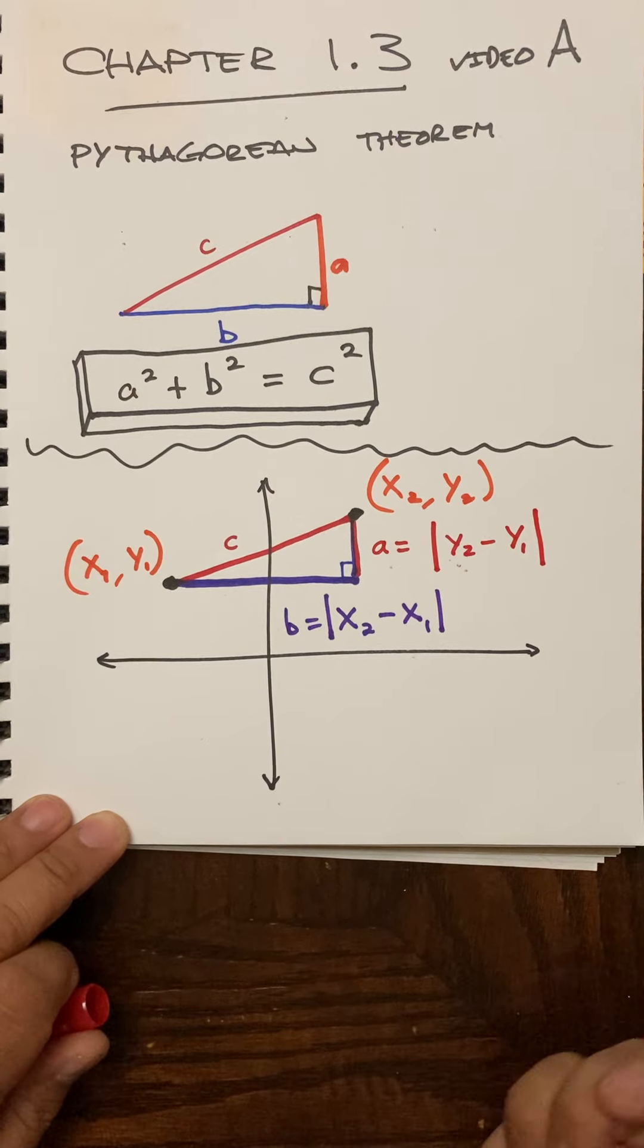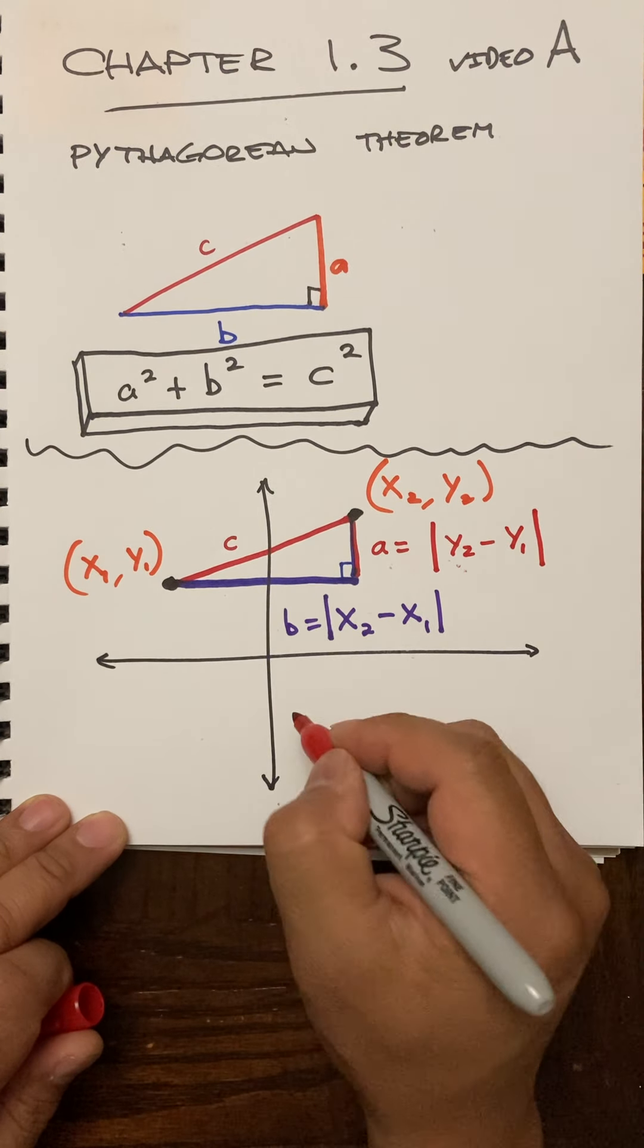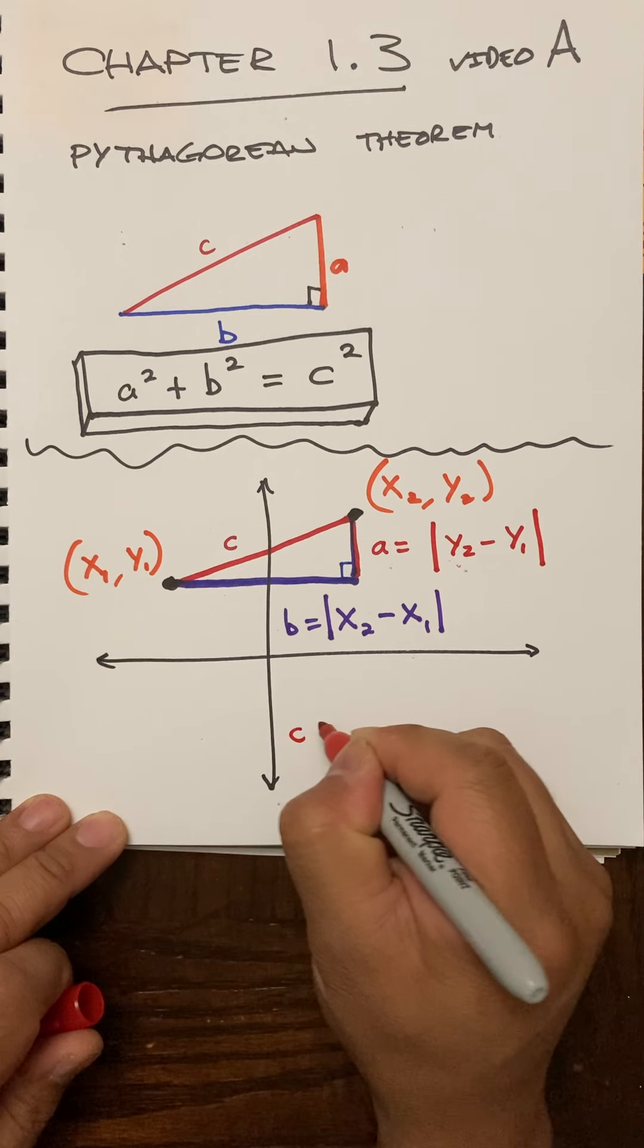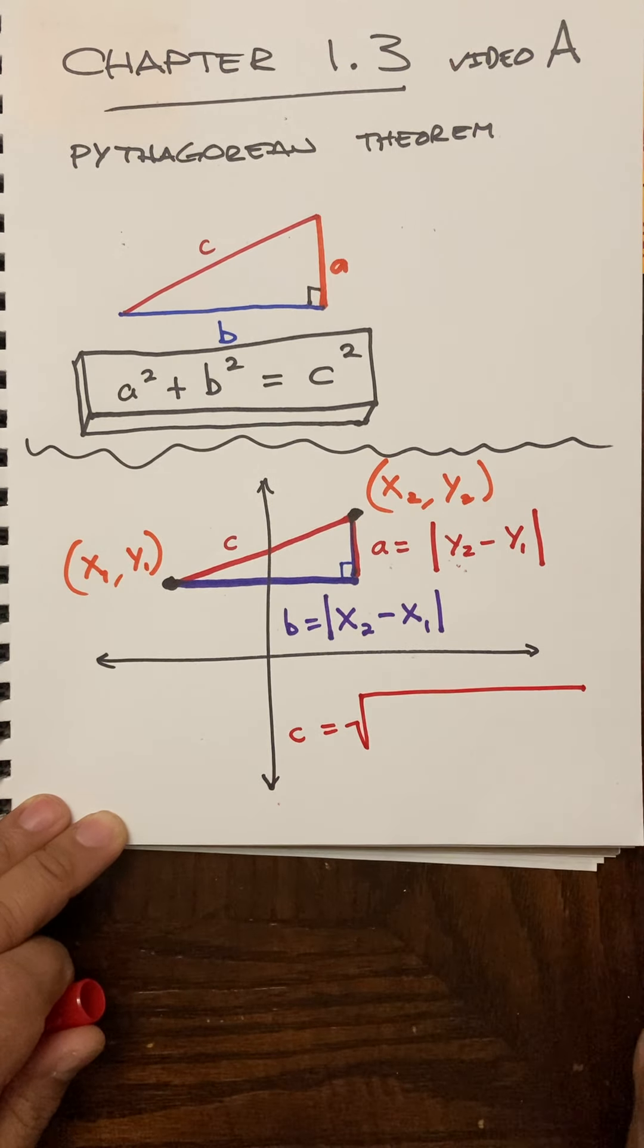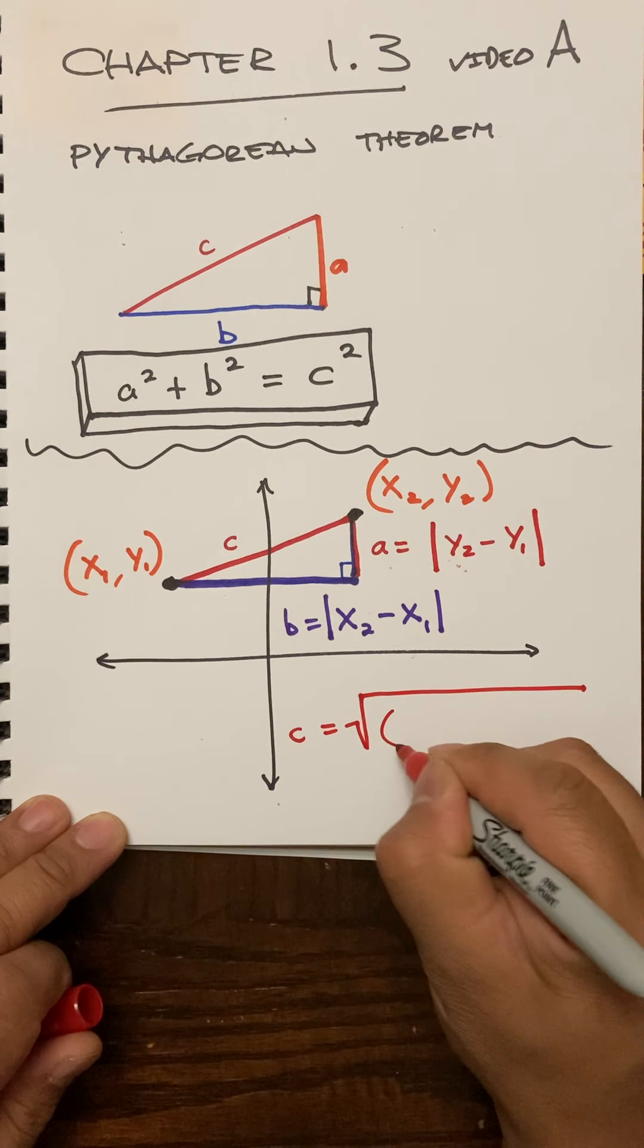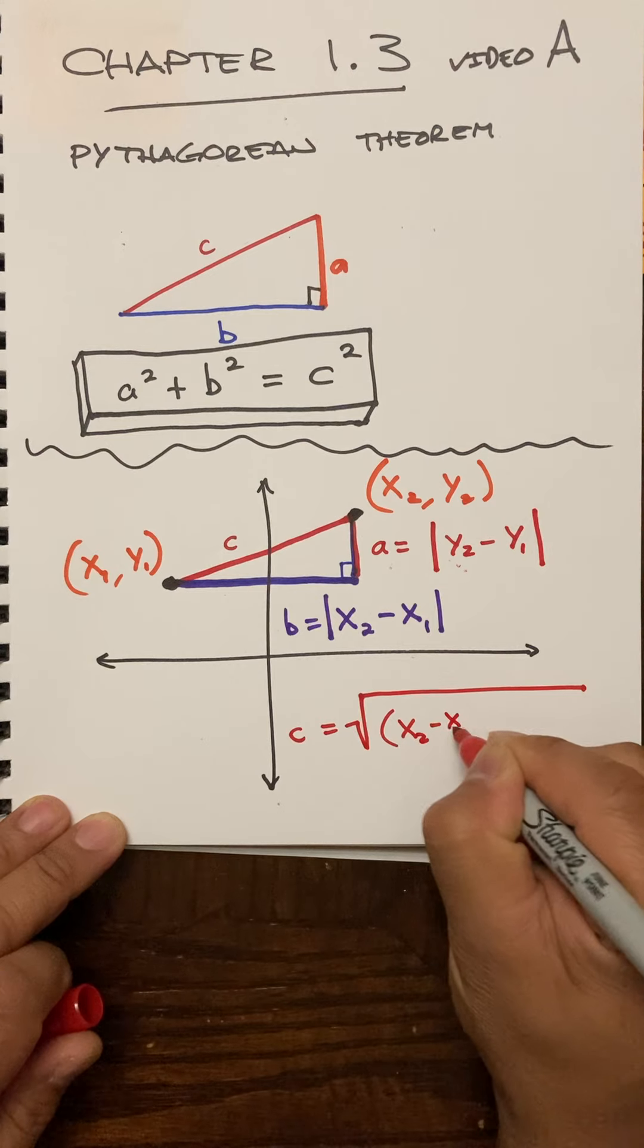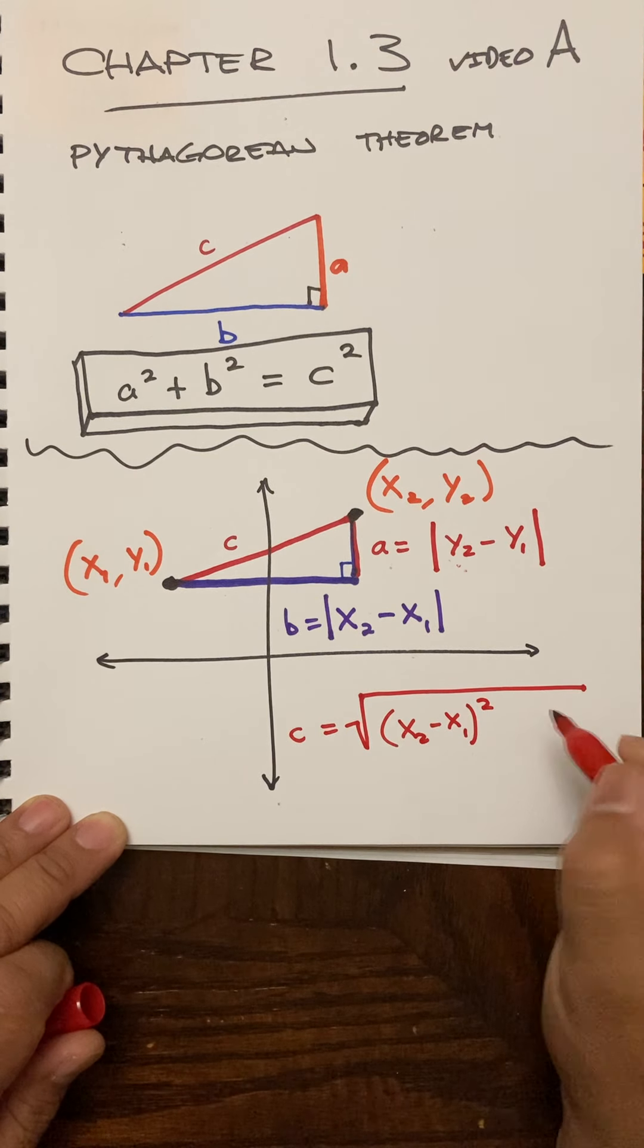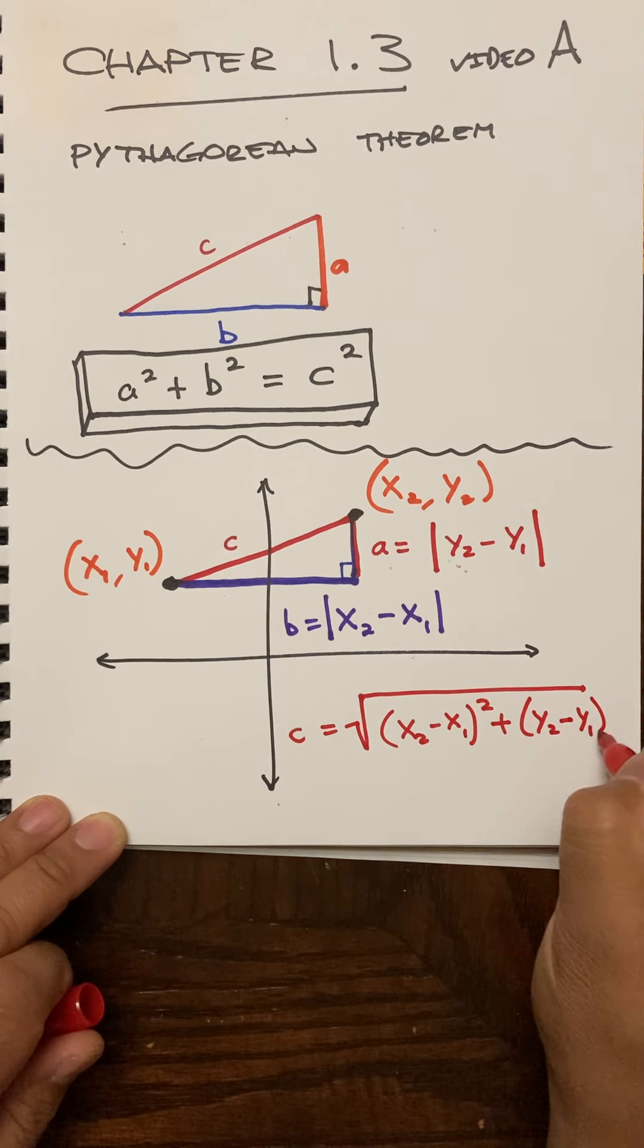Okay, and so our modified Pythagorean theorem is going to be c equals the square root of x2 minus x1 squared plus y2 minus y1 squared.